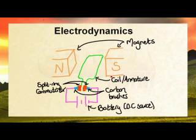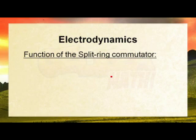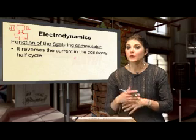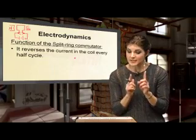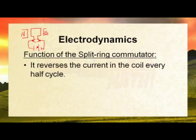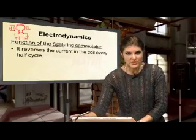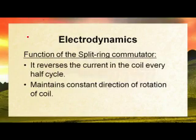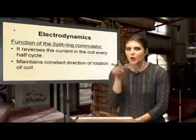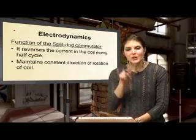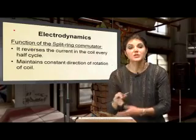Let's take a closer look at the functions of these components, starting with the split ring commutator. Its most important function is that it reverses the current inside the coil. The current coming from the DC power source is fixed and won't change, but within the coil the current will rotate and change direction. The second function is that it maintains a constant rotation in one direction — not clockwise then anticlockwise, but continuing clockwise or anticlockwise smoothly and evenly throughout.